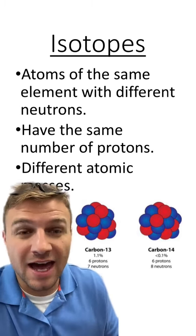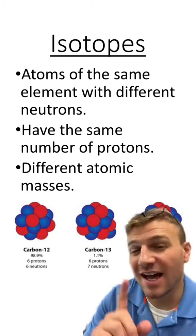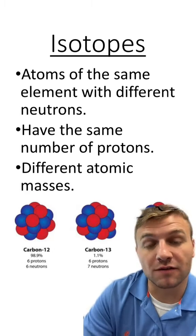So no matter what atom of, let's say, carbon we're looking at, it will always have six protons in its nucleus. The isotopes of carbon will have six protons, but they'll have different numbers of neutrons.